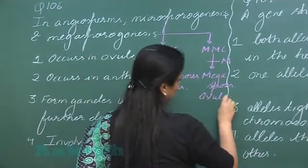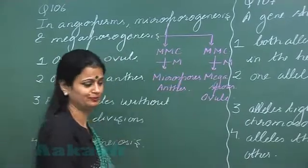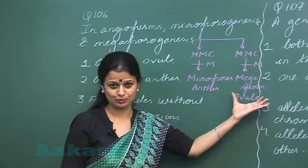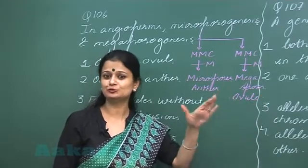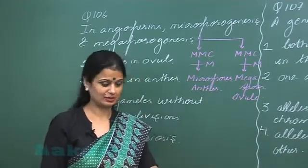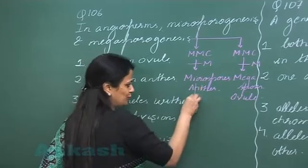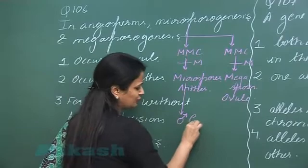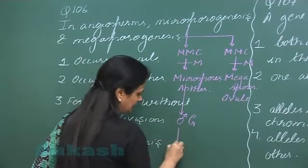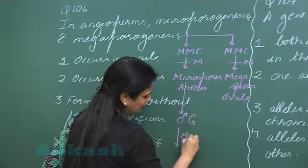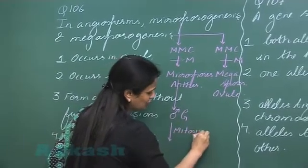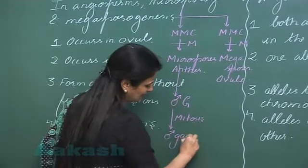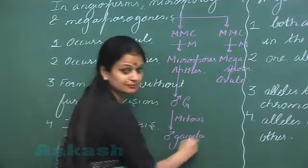The microspore and megaspore form gametophytes. The microspore forms the male gametophyte, and in the male gametophyte, after mitosis, there is formation of the male gamete.